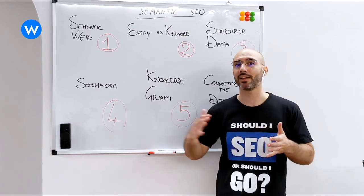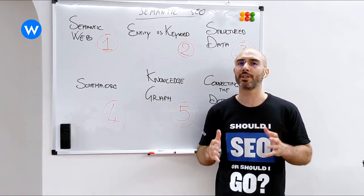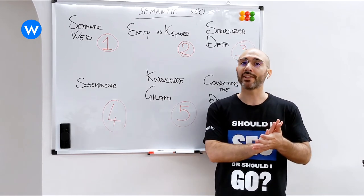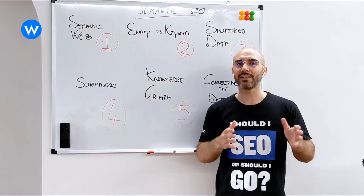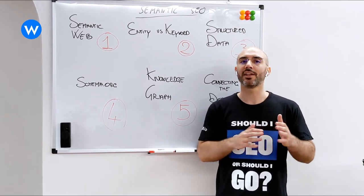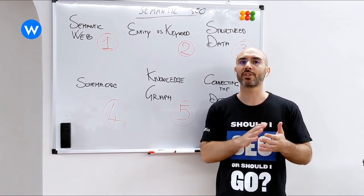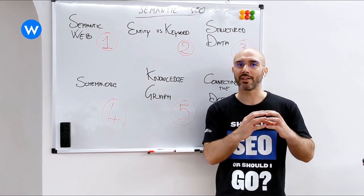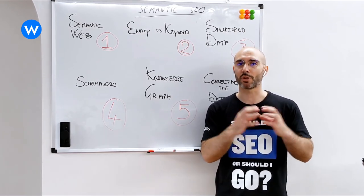This is the key difference between an entity and a keyword. You can appreciate the power of an entity, because an entity is something that the search engine can understand right away. There is no other specifications that you have to give to the search engine, because you are providing something that is machine-readable.